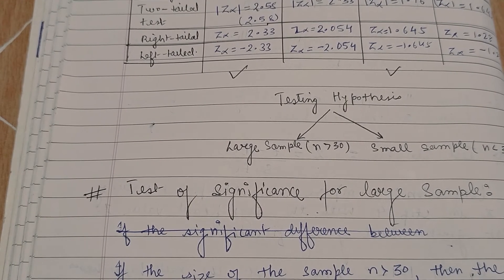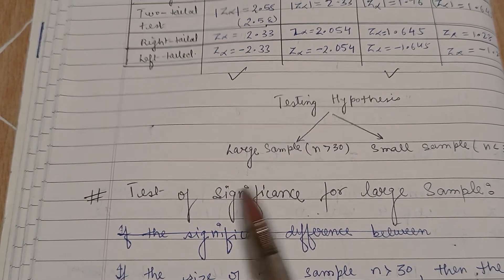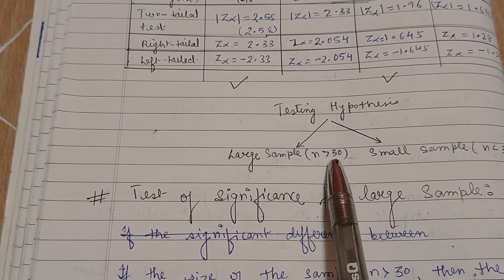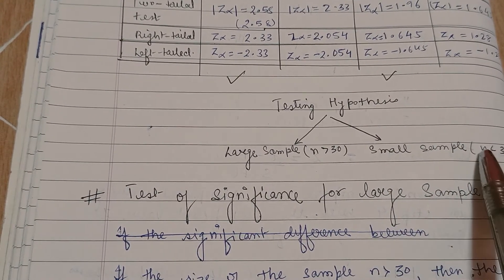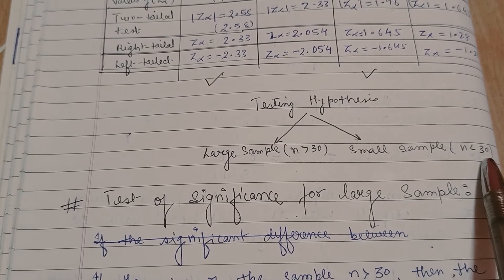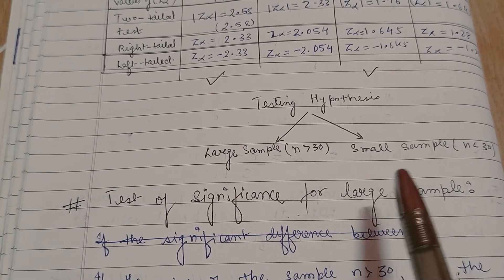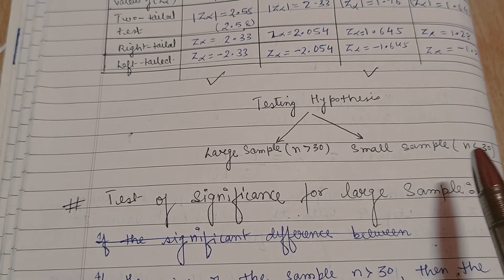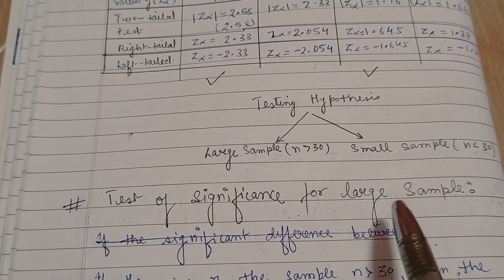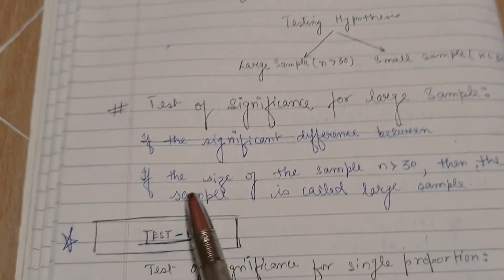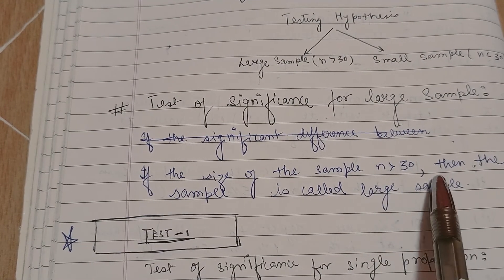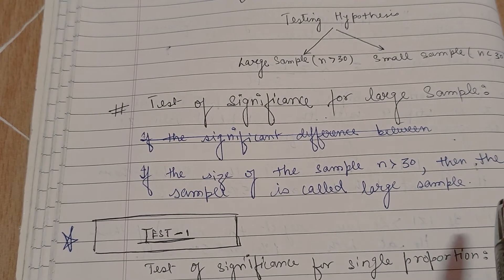There are two broad categories of hypothesis testing: large sample, where n is greater than 30, and small sample, where n is less than 30. In this module we will be dealing with large samples, and in the next module we will deal with small samples. For large samples: if the size of the sample n is greater than 30, the sample is called a large sample.